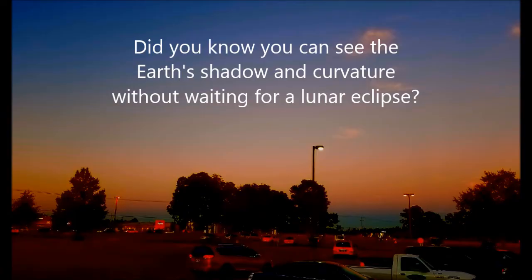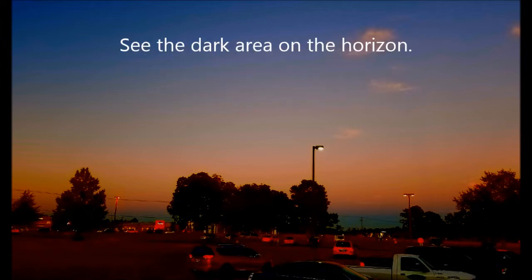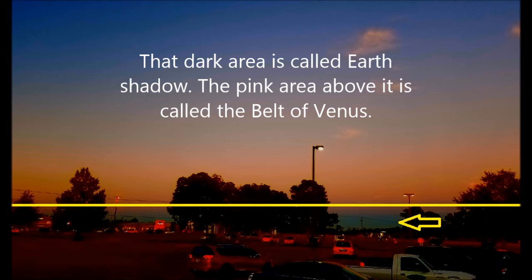Did you know you can see the Earth's shadow and curvature without waiting for a lunar eclipse? See the dark area on the horizon? That dark area is called Earth's shadow. The pink area above it is called the belt of Venus.